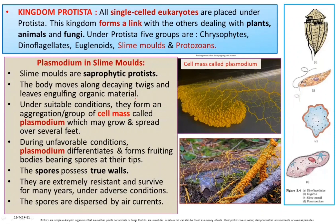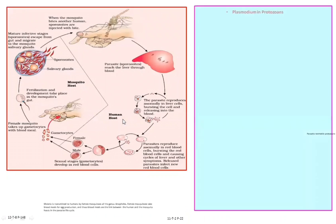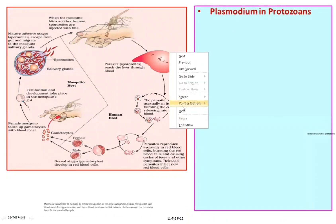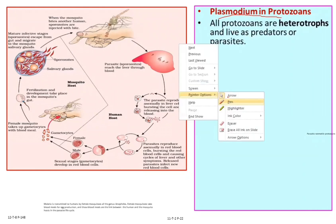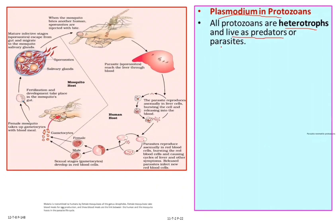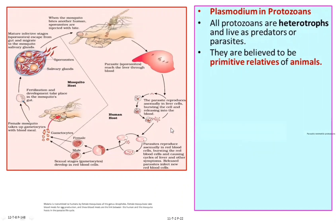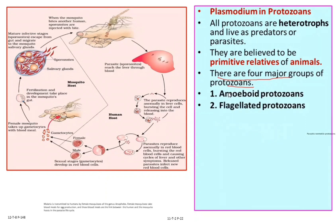Now we look at the term plasmodium in the context of protozoans. All protozoans live as predators or parasites. They are believed to be the primitive relatives of animals. There are four major groups of protozoans.